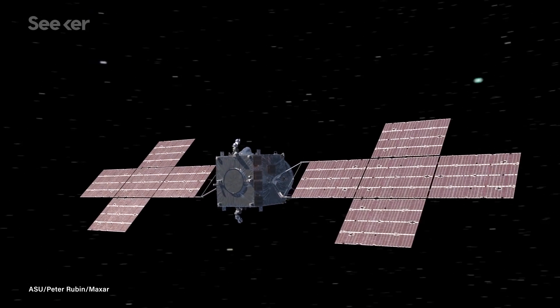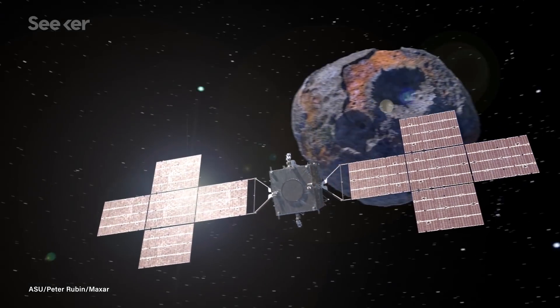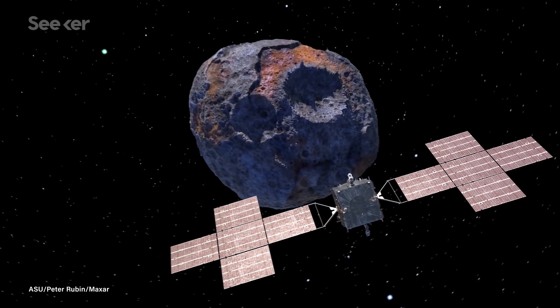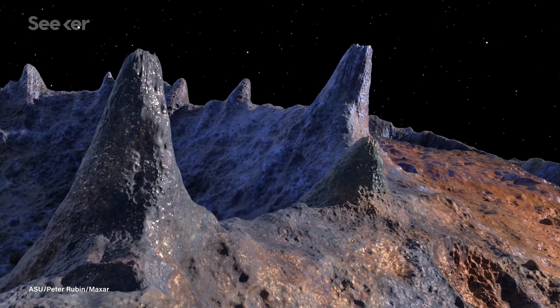Lurking between Mars and Jupiter lies the large asteroid Psyche, one of the only asteroids that we know of that scientists believe may be mostly made of metal.